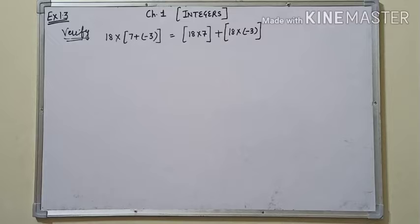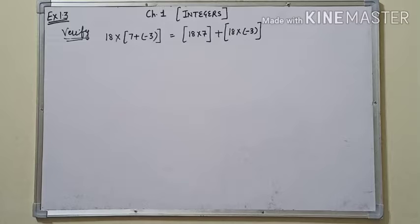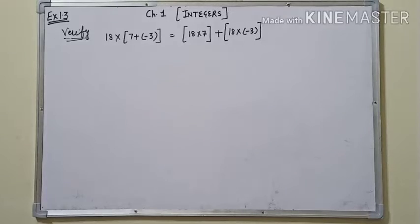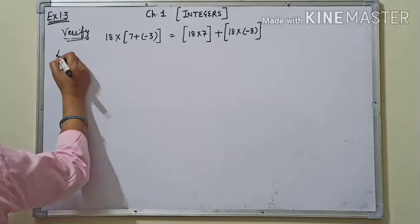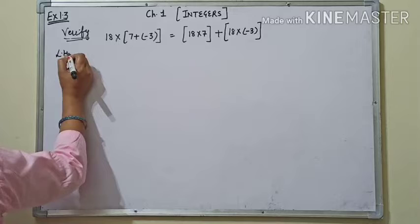18 into (7 + (-3)) is equal to 18 multiply 7 plus 18 multiply (-3) — हमको verify करना है। Verify वाले questions हम कैसे करते हैं? Left hand side अलग लेते हैं और right hand side अलग लेते हैं। तो हम left hand side पहले लेते हैं।